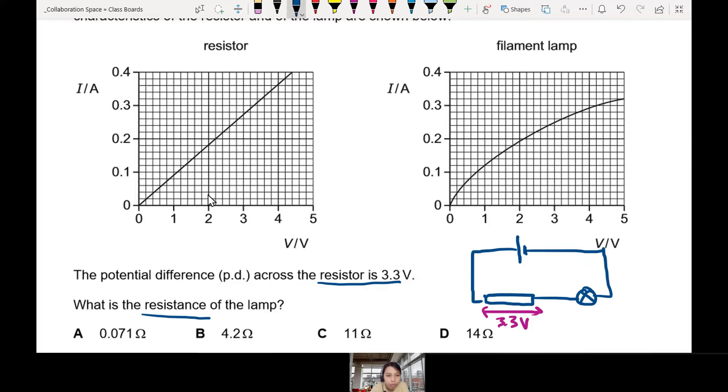If you have 3.3 volts, where is 3.3? This is 2, 4, 6, 8. 3.3 is somewhere here. Let's draw some dotted lines up. Nice. So intersect 0.3. That means the current flowing through this resistor is going to be 0.3A.